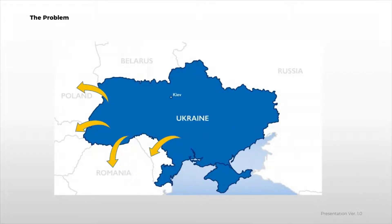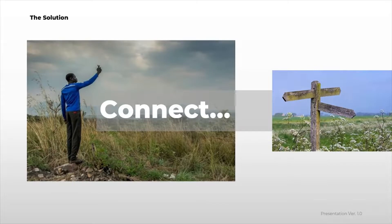These people need protection and support. And as the situation continues to unfold, it is estimated that 4 million people may flee Ukraine in the coming days. So how do we provide protection and support when many of us do not have the means the way governments and big companies have? We help by connecting people — connecting those seeking help to those providing the help.